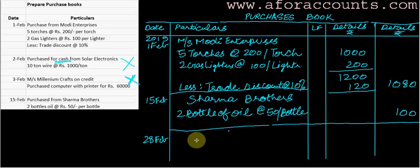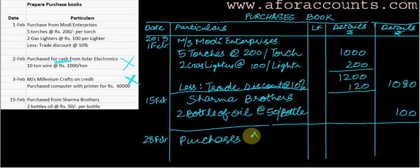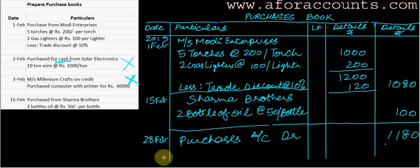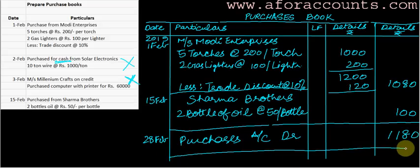On 28th February, the Purchases Account is debited. Purchases have to be debited — the total is 1180. This is how you prepare your purchase book.